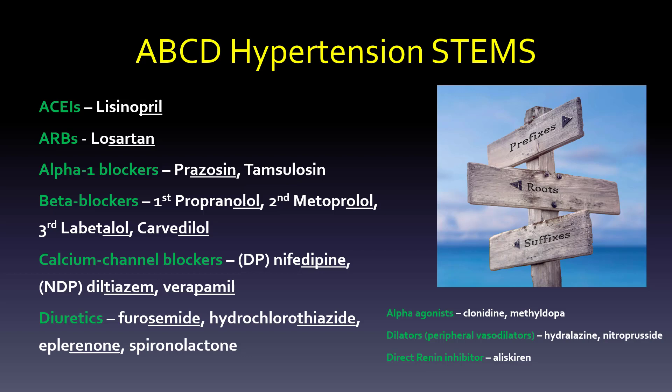Beta blockers — be careful. First and second generations have the same stem of -OLOL. For calcium channel blockers, we divide them into dihydropyridines like nifedipine, or non-dihydropyridines, which are diltiazem and verapamil. And then the diuretics — furosemide is not for hypertension in general. Really, it's hydrochlorothiazide that's first line, and then the potassium-sparing diuretics, but hydrochlorothiazide is definitely preferred.